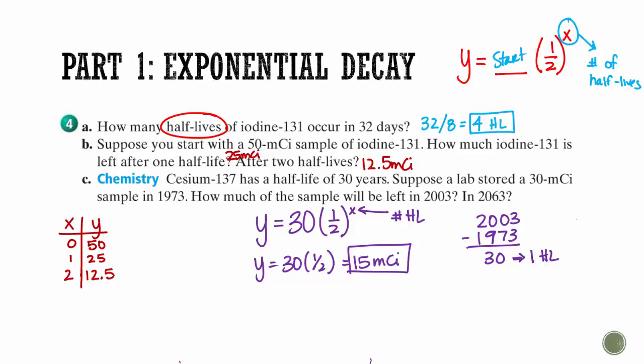And then in 2063, so we could think about it, or we could do some math to back it up. That's been 60 years, which is two half-lives. So remember, don't plug in 60 up here. Plug in 2. So that means that we're going to take 30. And one-half squared is one-fourth. And if you cut 30 into fourths, you end up with 7.5 millicuries.